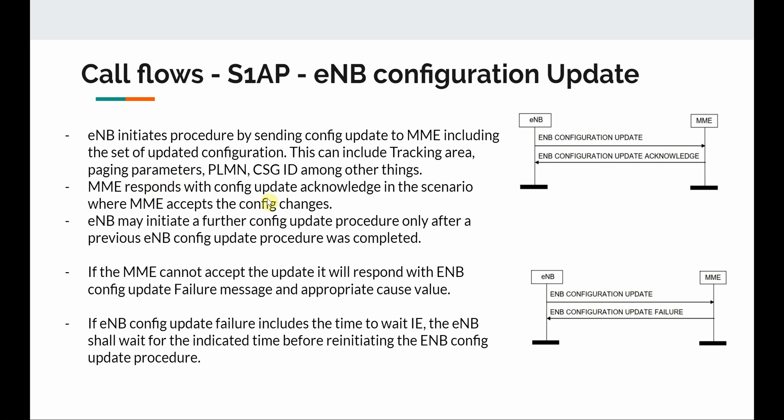The eNodeB may initiate a further configuration update procedure only after a previous config update has been completed. This is a 3GPP requirement — it's not the case that if you change two parameters and one failed, the second would still complete. The eNodeB can only initiate subsequent config updates if the first one was successful, which makes sense to prevent the network from going out of sync.